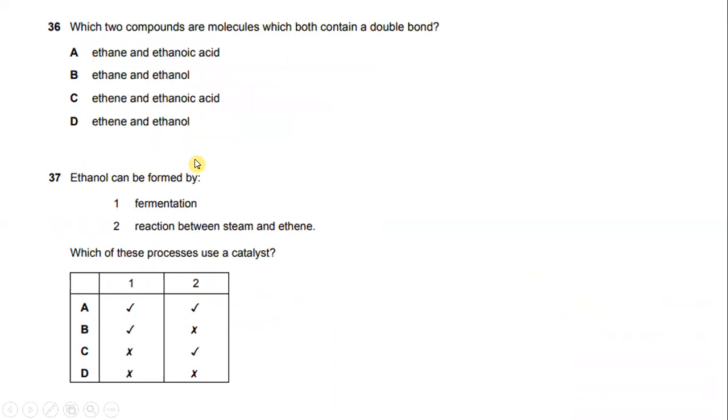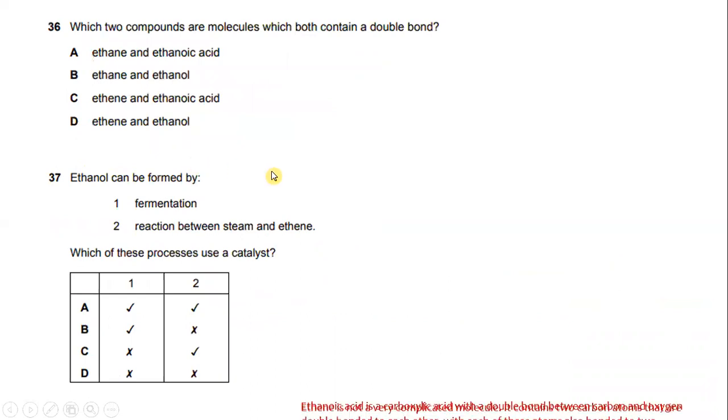Which two compounds are molecules which both contain a double bond? Ethanoic acid is a carboxylic acid with a double bond between carbon and oxygen. Ethene is a simple molecule that contains two carbon atoms that are double bonded to each other, with each of these atoms also bonded to hydrogen atoms. So the answer will be C.